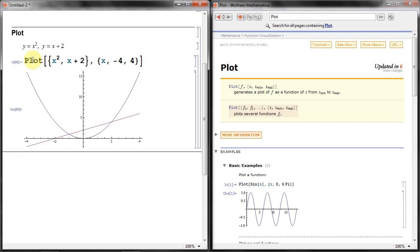And again, the way it works is, you say plot and inside this first brace here is your X squared and X plus two. They are the two functions I want to plot. And then a comma again, and then this one here is the range of X values.